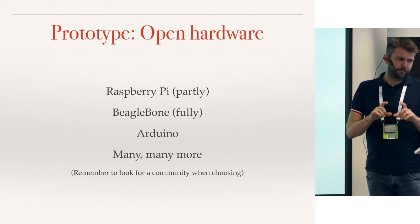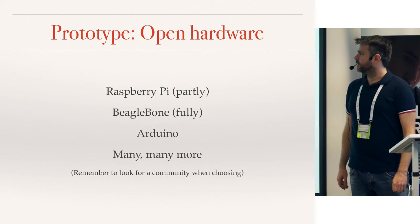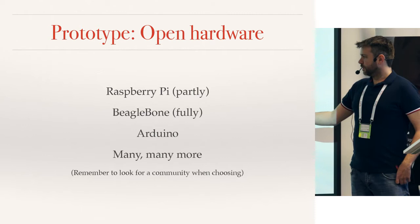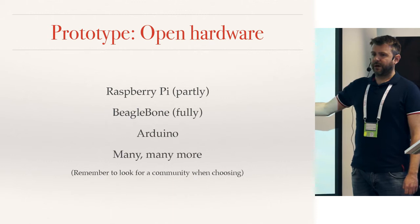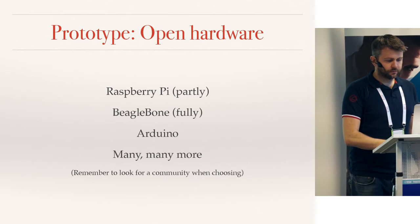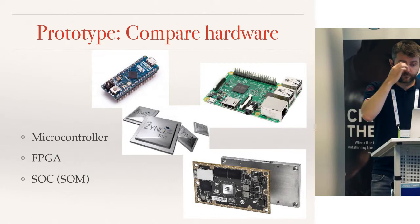Raspberry Pi is partly open source — the PCB is open source but it's a system-on-chip using Broadcom, so there's a hidden agenda to sell more Broadcom chips. BeagleBone is fully open sourced, and you have lots of Arduino options too. My last comment is: look for a community. There are so many options, and if you can't find a community even though the specs are awesome, you're on your own — and you don't want that, trust me.